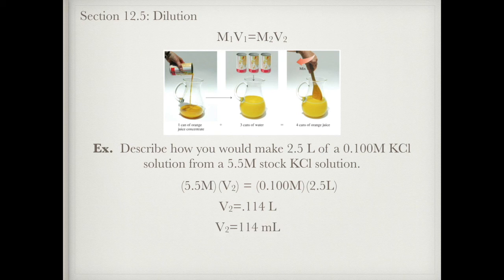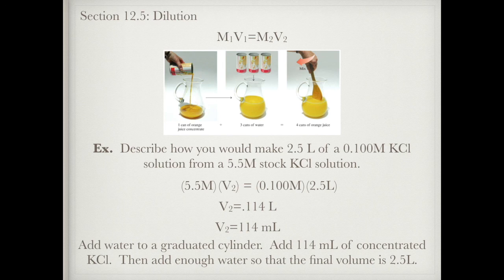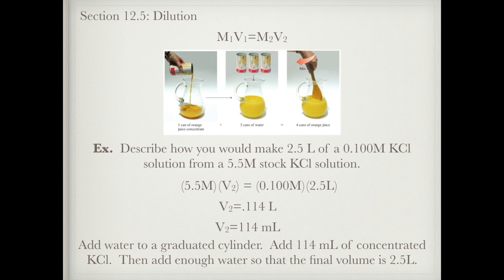Since 0.114 liters isn't a typical lab measurement, I'll convert that to 114 milliliters. In the lab, I'll add a good amount of water to my graduated cylinder first, then add 114 milliliters of my concentrated KCl, and then add enough water to reach a final volume of 2.5 liters. The reason I add water first is because the concentrated solution could splash if I pour water directly onto it.